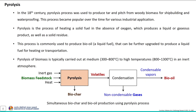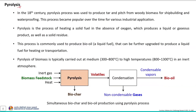The next important process is pyrolysis. Its use for thermal applications dates back to the 18th century, when it was used to produce tar and pitch from woody biomass for shipbuilding and waterproofing applications, and thereafter the process became popular for various industrial applications. This scheme represents the pyrolysis process, which involves heating of solid fuel in absence of oxygen, carried out mostly in an inert environment, producing liquid, gaseous products as well as solid residue.